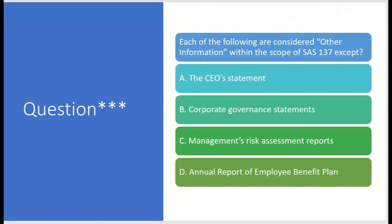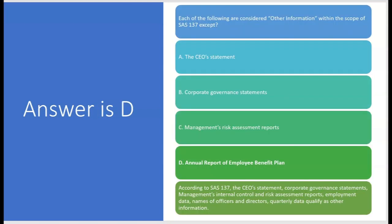Each of the following are considered other information within the scope of SAS 137 except — A, the CEO's statement: no, that is included. B, corporate governance statements: included in the list. C, management's risk assessment reports: included too. So the answer is D — the annual report of the employee benefit plan. Even though that might be in the annual report, it would not be included as other information. According to SAS 137, what's included: the CEO's statement, corporate governance statements, management's internal control and risk assessment reports, employment data, names of officers and directors, and quarterly data.